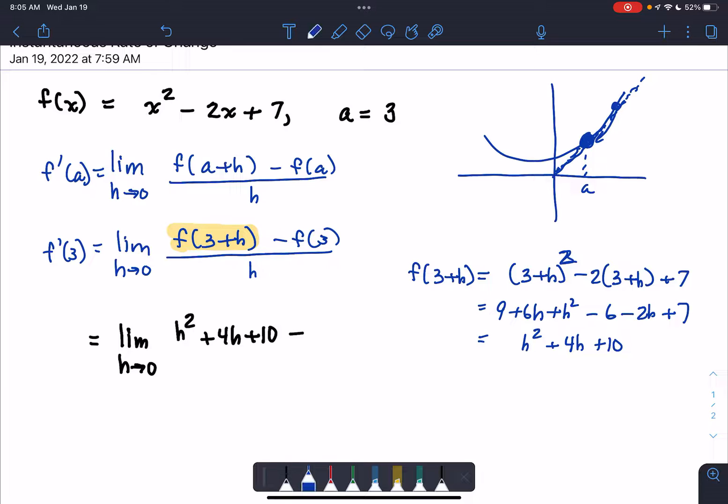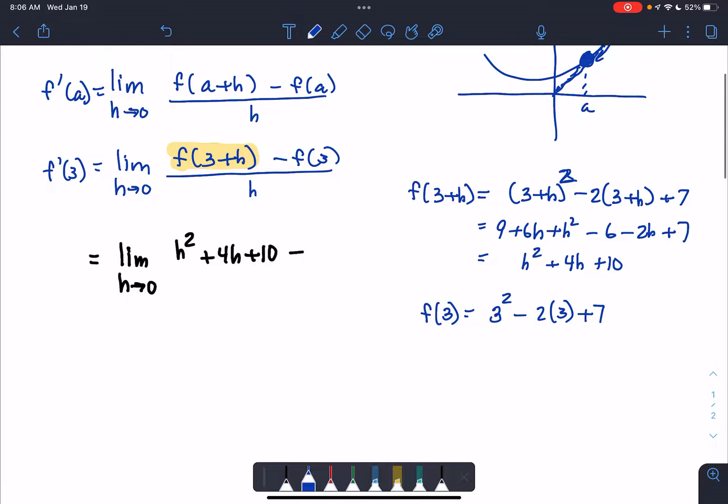Now what is f of 3? f of 3 is 3 squared minus 2 times 3 plus 7, which is 9 minus 6 plus 7. 9 minus 6 is 3 plus 7 is 10. So f of 3 gets replaced by 10.